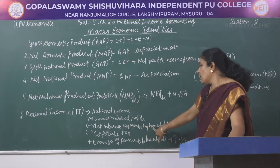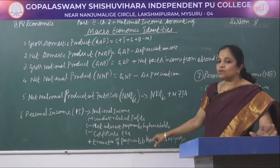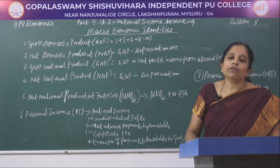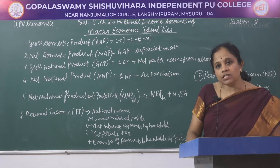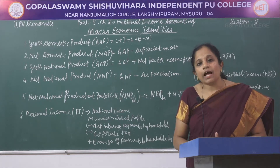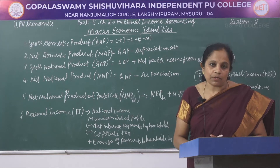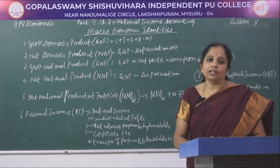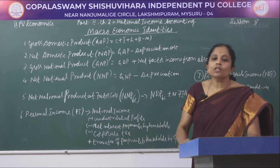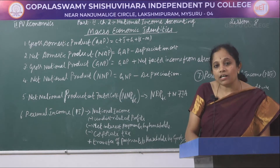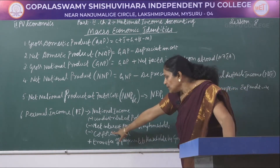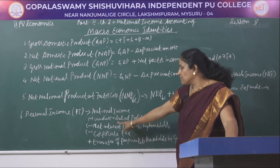The second deduction from national income is net interest payments by households. Many households are involved in income-generating activities through cottage, tiny, and small-scale industries. To organize these activities with capital, households pay interest. The total interest paid by households across all small-scale industries in the country is deducted from national income.